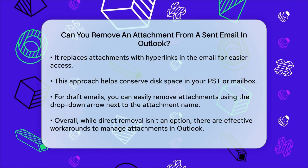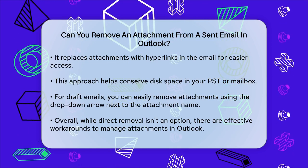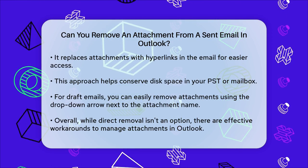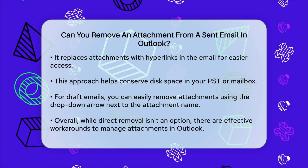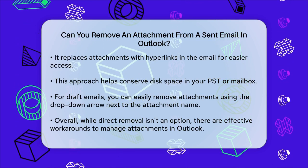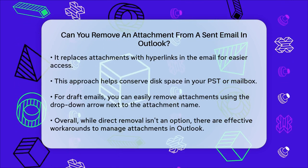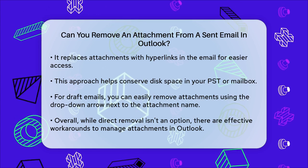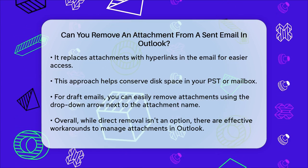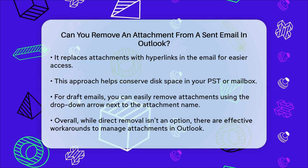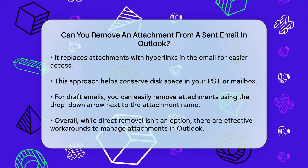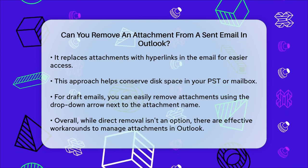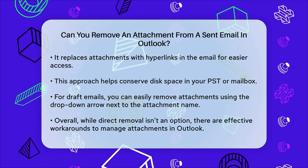In summary, while you can't directly remove an attachment from a sent email in Outlook without deleting the email, you can use workarounds like saving attachments to external storage and forwarding the email without them, or use specialized add-ins to manage attachments more efficiently. These methods help you keep your Outlook account organized and your storage space optimized.